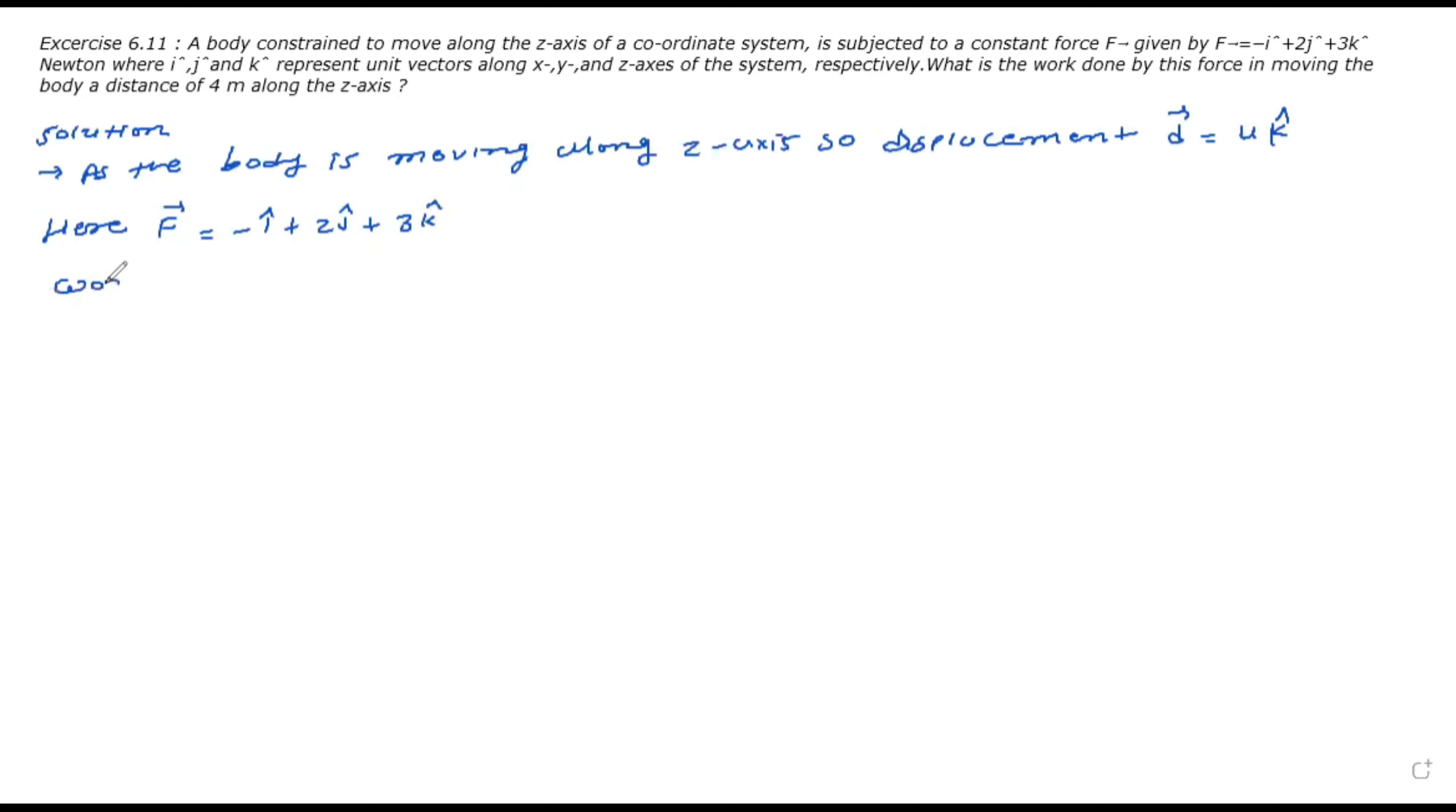So work done by this force. We know that work done is the dot product of force and displacement. Here you have to remember that work is a scalar quantity. It is the dot product of force and displacement. Force is minus i-cap plus 2j-cap plus 3k-cap, while displacement is 4k-cap.